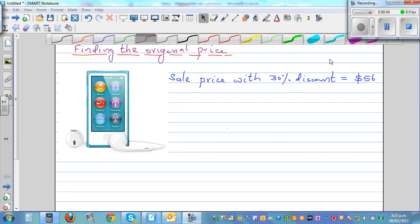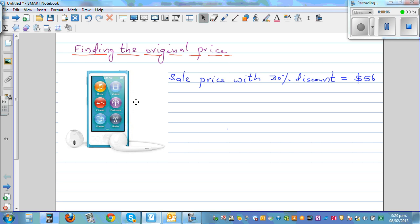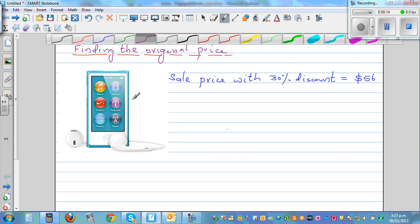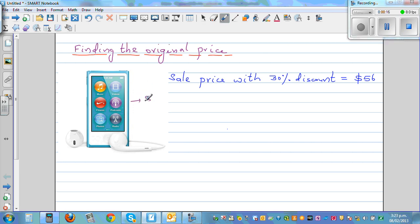We want to find the original price of this iPod. What does it say? The sale price with a 30% discount is $56. So this is an iPod which is selling at $56, and what we are told is there is a 30% discount on it. And we want to find what's the original price.